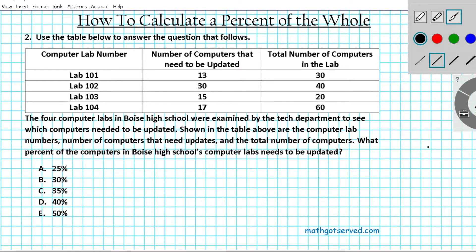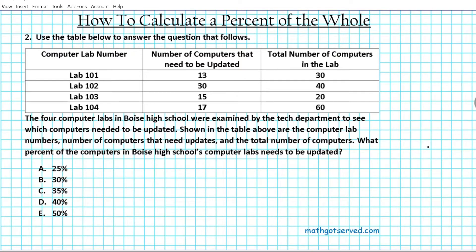Question number two reads: Use the table below to answer the question that follows. The four computer labs in Boise High School were examined by the tech department to see which computers needed to be updated. Shown in the table above are the computer lab numbers, number of computers that need updates, and the total number of computers. What percent of computers in Boise High School computer labs needs to be updated?